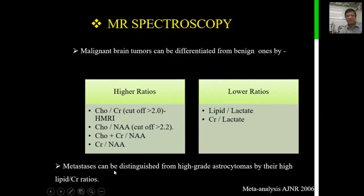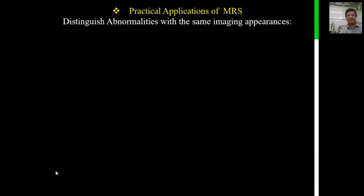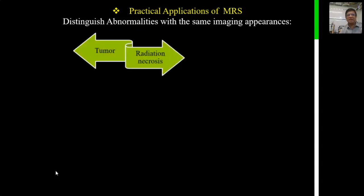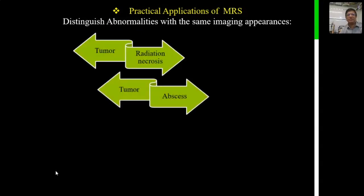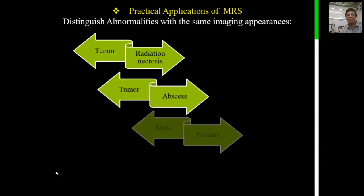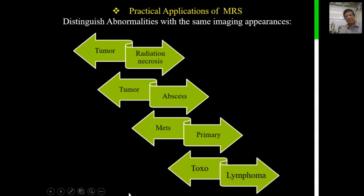Metastasis can be differentiated from high-grade tumors by the presence of a high lipid-to-creatine ratio. The practical applications of MR spectroscopy include distinguishing abnormalities with the same imaging appearances — such as differentiating tumor from radiation necrosis, cystic tumor from abscess, metastasis from astrocytoma or glioma, and toxoplasma from lymphoma in immunocompromised patients.